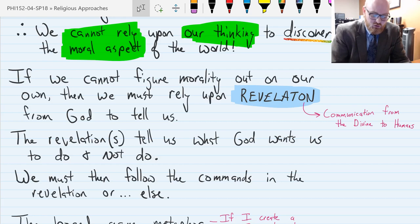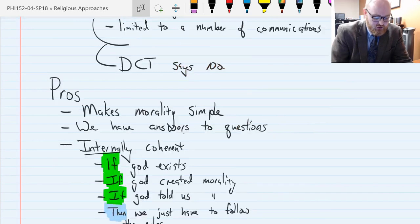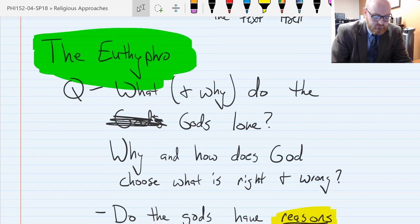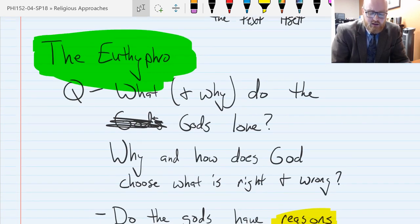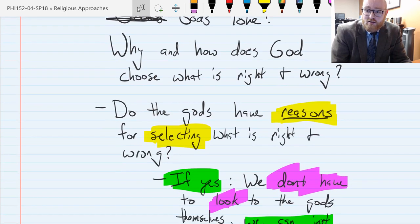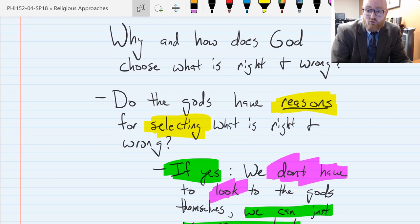So with that, if we have to rely upon revelation, then one question that comes up is what and why do the gods love what the gods love? Is how it's phrased in the Euthyphro. We might say, why does God choose what is right and wrong? Kind of in a monotheistic context, which is closer to what most divine command theorists are today. And so another way of stating this is, do the gods have reasons for selecting what is right and what is wrong?